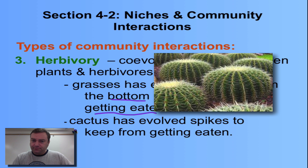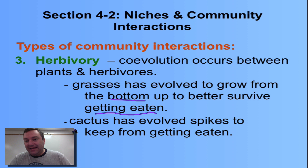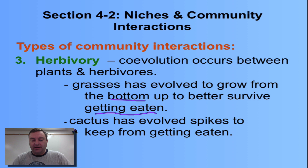Cactus have evolved spikes to help keep them from getting eaten, and most organisms will avoid eating a cactus because of the spikes. Organisms that can eat a cactus have either learned how to pull off the spikes or use tools to get around them. So once again, we see co-evolution at work.